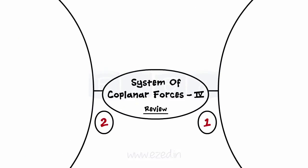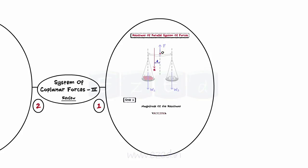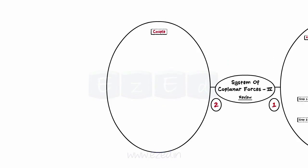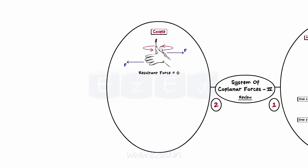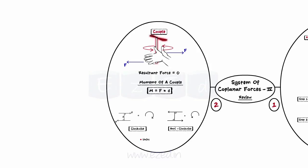Let us have a quick review of what we have studied in this lecture. We learned how to find the resultant of a parallel system of forces, following specific steps. We learned about the concept of a couple — a system of forces with a resultant moment but no or zero resultant force. The effect of a couple is to rotate the body on which it acts. Moment of a couple is the product of the magnitude of one of the forces and the distance between them. Rotation of a couple can be clockwise or anticlockwise, and units of a couple are newton meters.